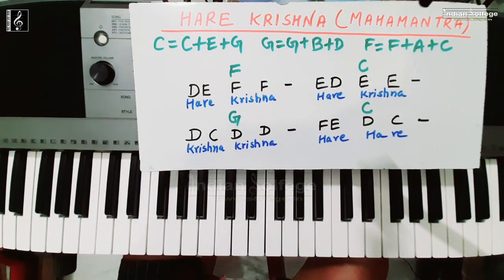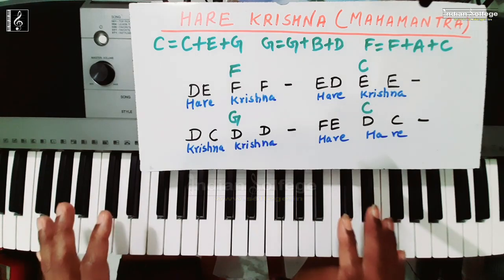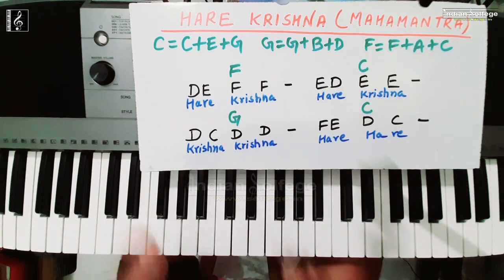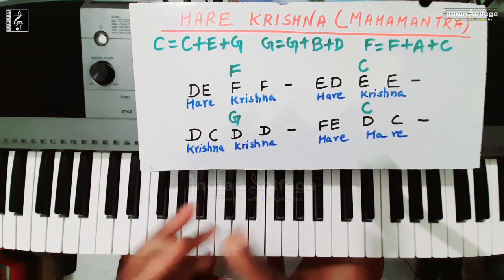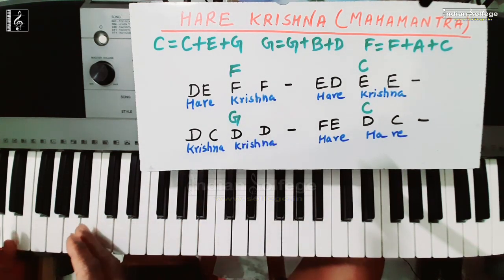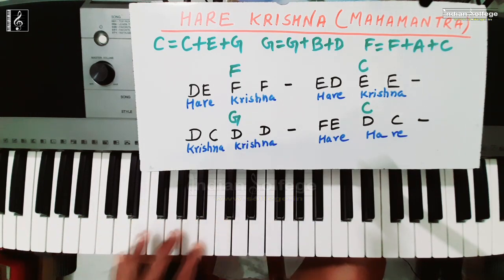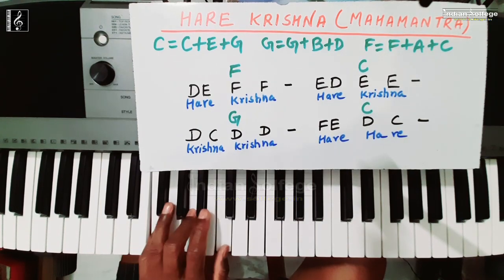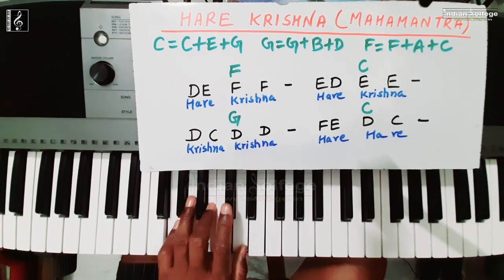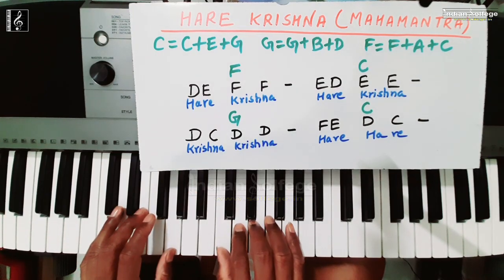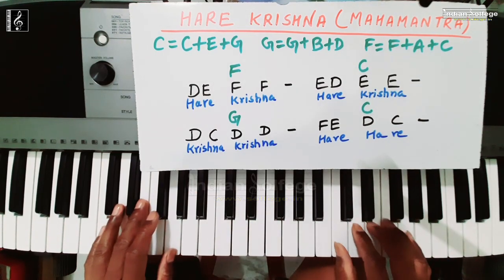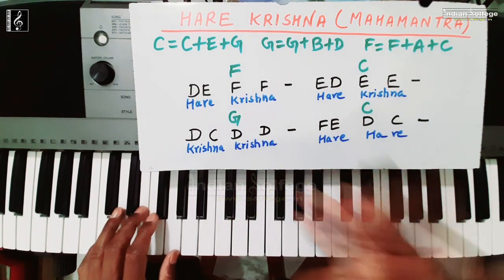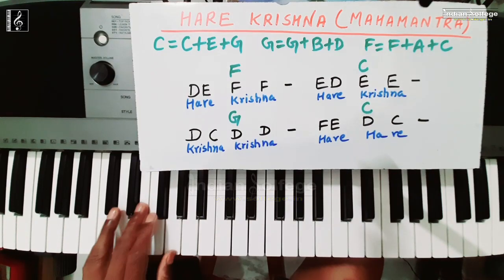पहले slow practice करने की कोशिश कीजिए — जितना आसानी से play कर सकें। फिर धीरे-धीरे इसे fast करते जाइए। अच्छी तरह practice करने के बाद जो chords आपने left side लगाए थे, उन्हें right side भी लगाने की कोशिश करें: C major, F major, G major। Right hand को next octave में move कीजिए। पहले chord progression, फिर melody के साथ play कीजिए।